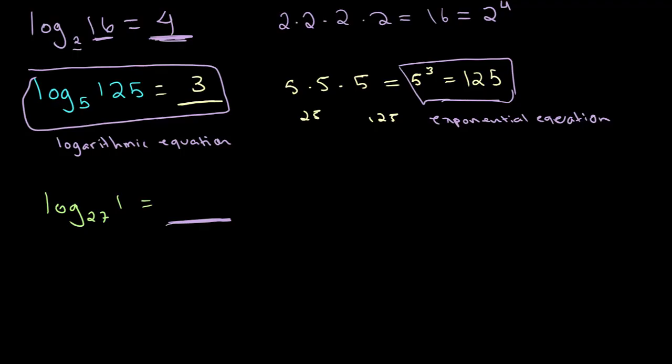So we know that any number raised to the power of 0, including 27, is equal to 1. Therefore, our answer over here is 0.